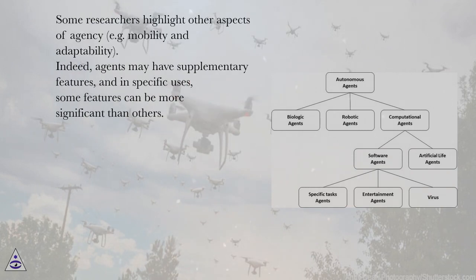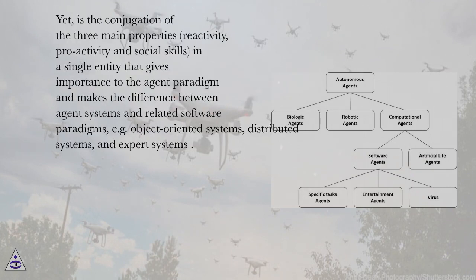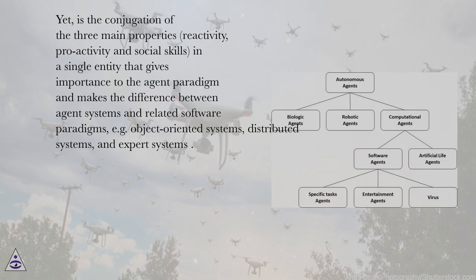Some researchers highlight other aspects of agency, for example mobility and adaptability. Indeed, agents may have supplementary features, and in specific uses, some features can be more significant than others. Yet it is the conjugation of the three main properties — reactivity, proactivity, and social skills — in a single entity that gives importance to the agent paradigm and makes the difference between agent systems and related software paradigms, for example object-oriented systems, distributed systems, and expert systems.